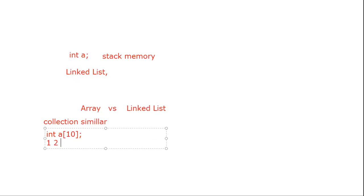You have already stored elements from 1 to 10 inside that array. During runtime, if you want to store an 11th element, is this possible with this array declaration? No, it is not possible. We have 10 different blocks and we used all 10 blocks to store 10 elements. The 11th element cannot be stored because the size of the array is limited — initialized to 10. So this is related to stack memory.